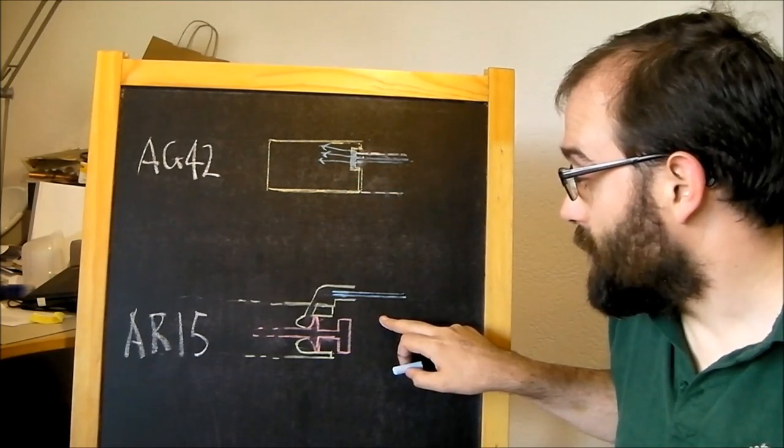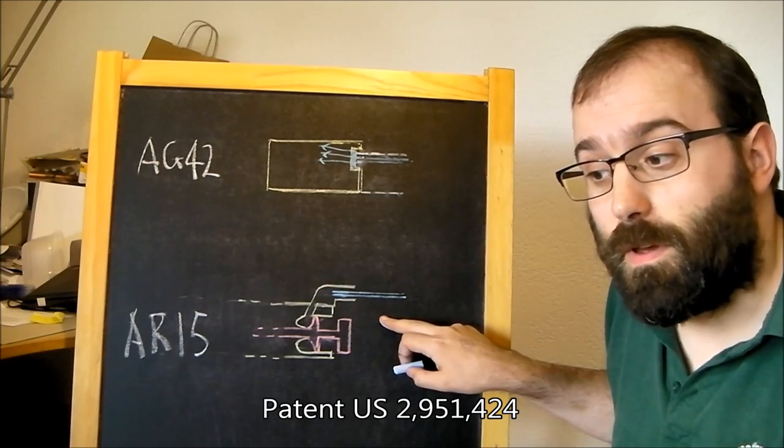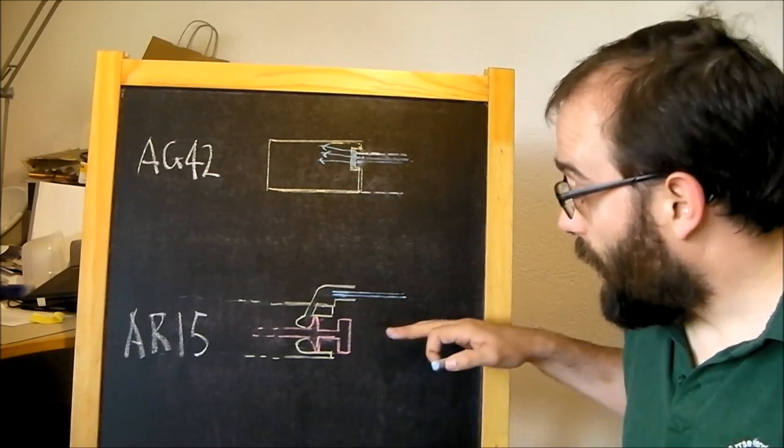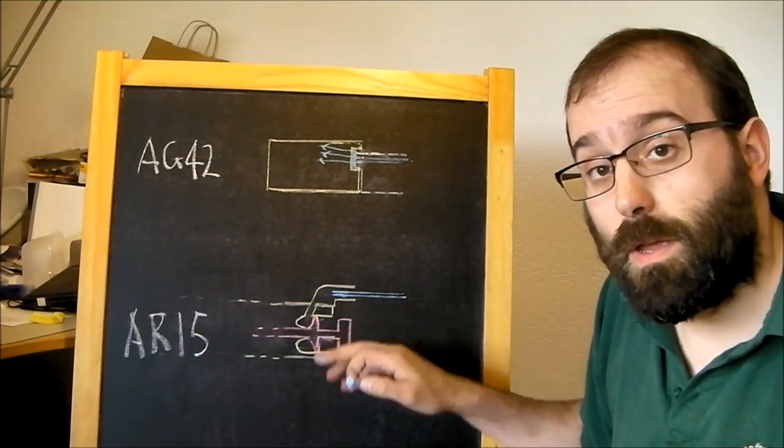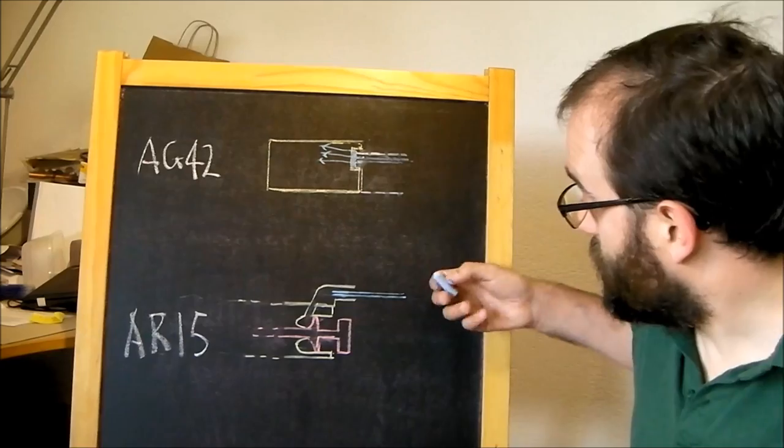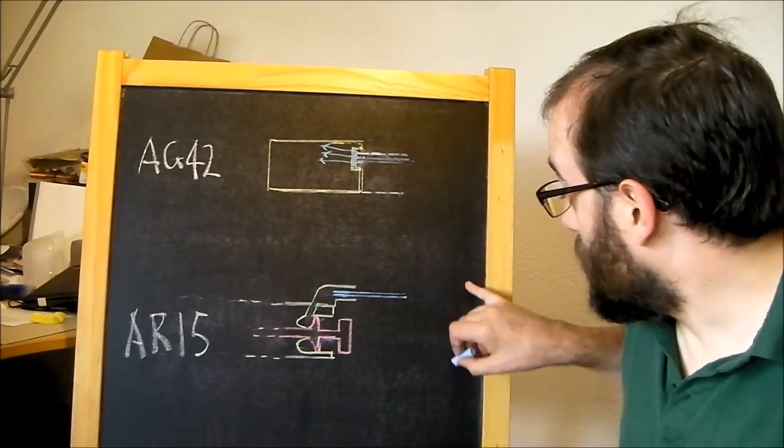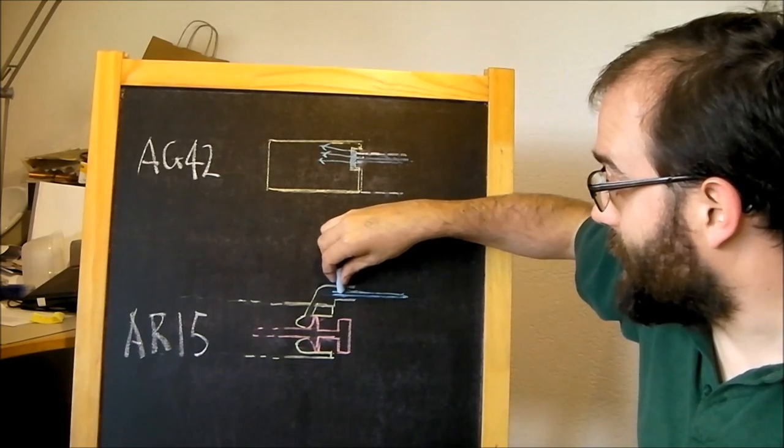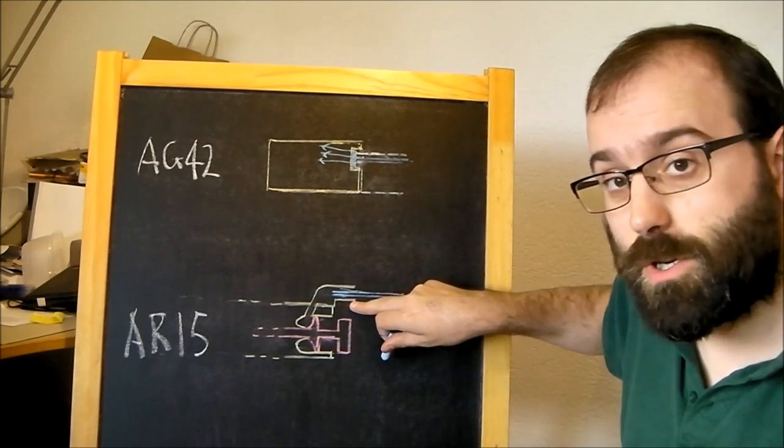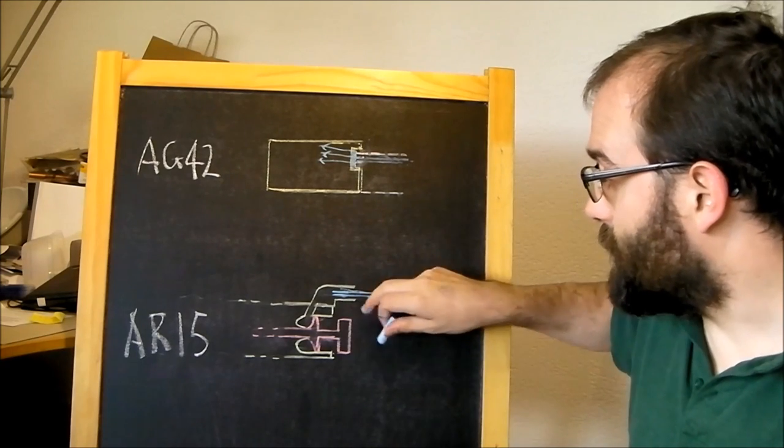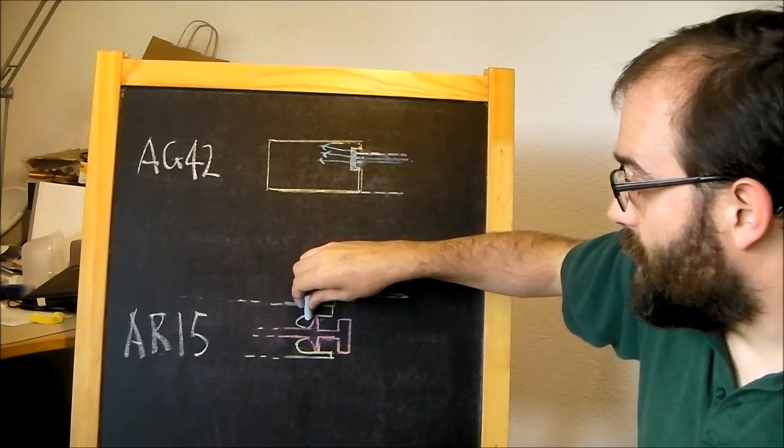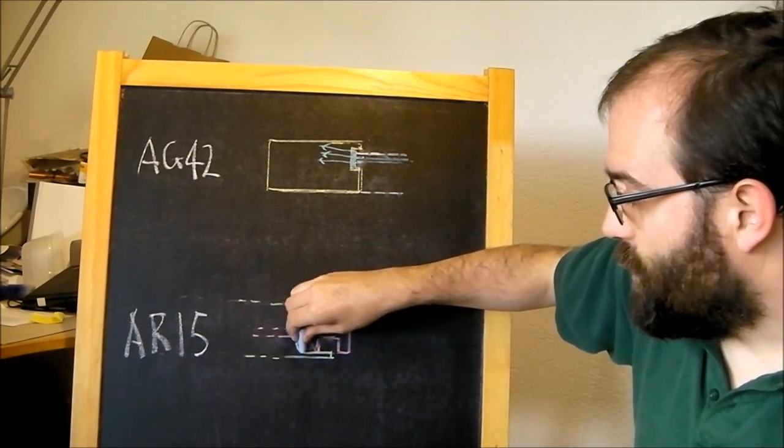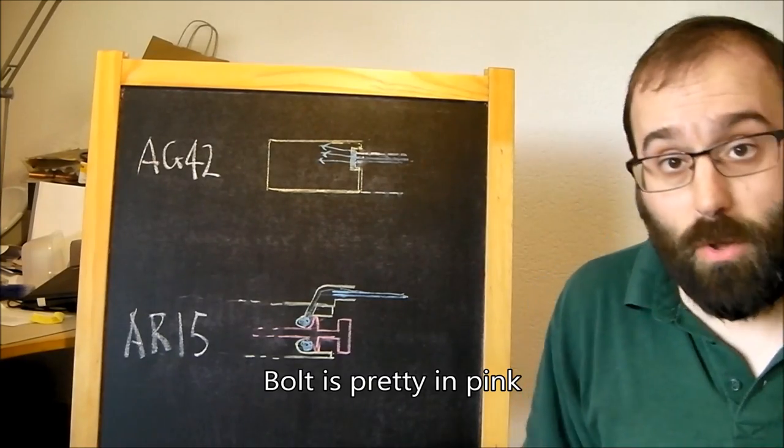Now what Eugene Stoner did was made a system that works much, much more smoothly and results in no off-axis forces. Everything works straight back. Now how does this happen? Again, we tap gas off up here somewhere. It flows down the gas tube. It enters the gas key, which is sleeved over the gas piston.